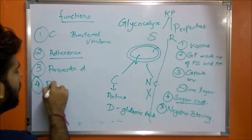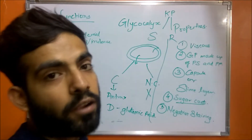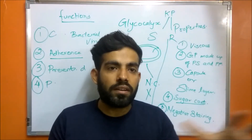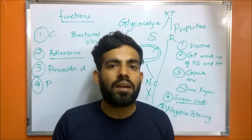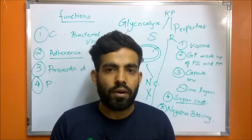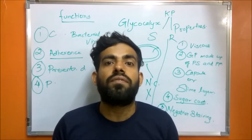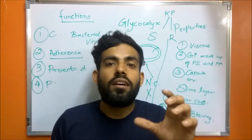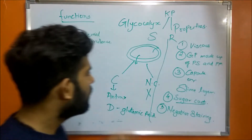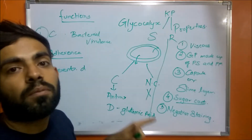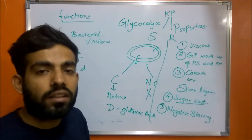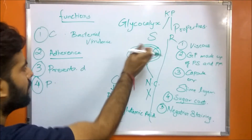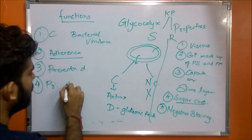The fourth function is that glycocalyx protects the cell from phagocytosis. Phagocytosis is the process of getting engulfed by another cell. Pathogens that invade our bodies are engulfed or phagocytized by macrophages. The presence of a capsule does not allow the macrophage or any other cell to engulf the bacterial cell, providing protection from phagocytosis.